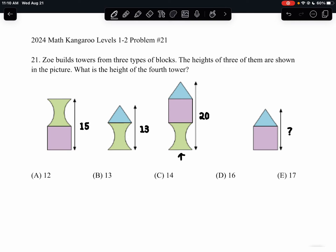Because we have all three types of blocks, right? The green one, the purple one, and the blue one. We can compare its height to the height of the other two figures to then figure out what the height of each individual piece is.